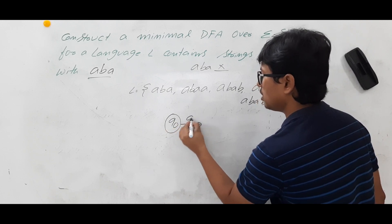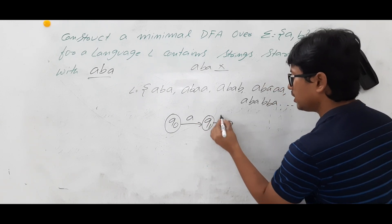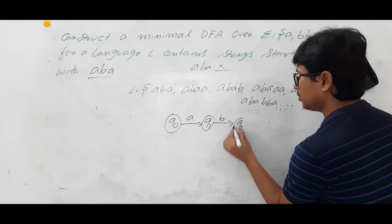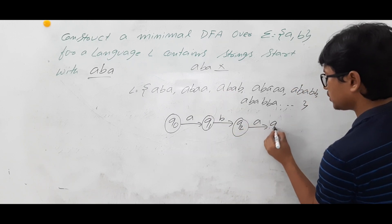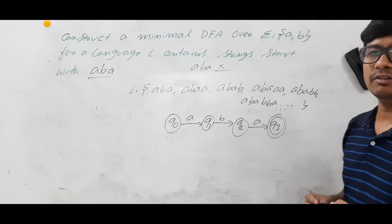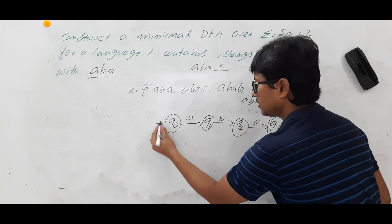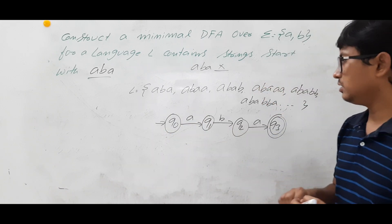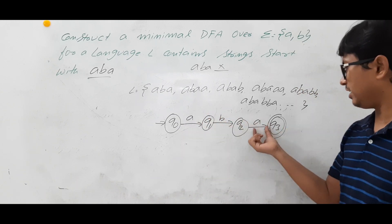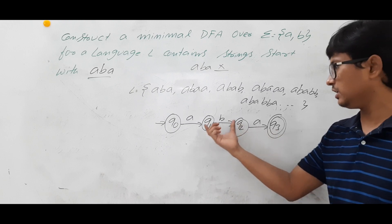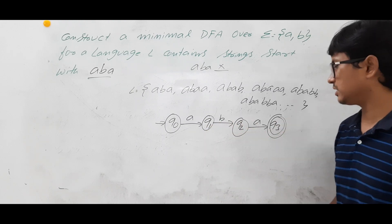From Q0 on A, we reach Q1. From Q1 on B, we reach Q2. From Q2 on A, we reach Q3. Q3 is a final state because from initial state Q0, on taking the string ABA, we should accept. We can say it is accepted only if we reach a final state, so Q3 is made the final state. However, this is not yet a complete DFA.